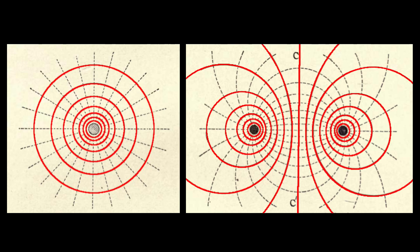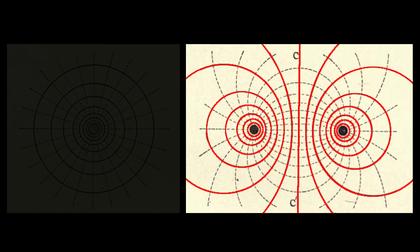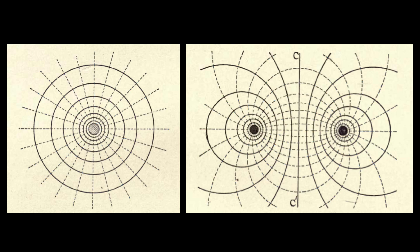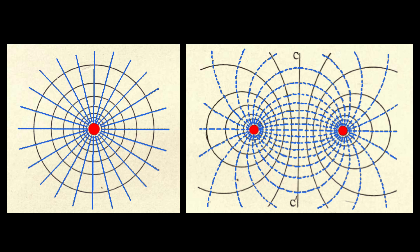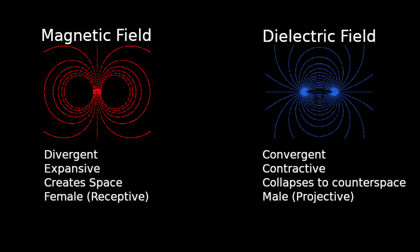The circles propagating outward from the conductors are the magnetic field. In the single conductor, the circles are concentric. In the system of conductors, the circles are eccentric. The radial dotted lines are the dielectric field. The relation between the magnetic and the dielectric is that the magnetic is parallel to the conductor, and the dielectric is perpendicular to the conducting surface. Lines of magnetic and dielectric inductive force are orthogonal, or perpendicular to one another at all points. Lines of magnetic force close on themselves — they are divergent, expansive, and create space.